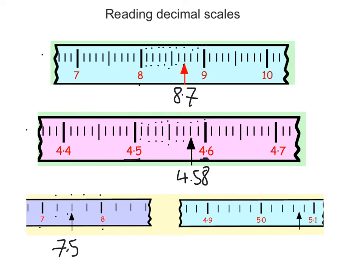Last one. Again, let's count the divisions between the two bold lines. So this is 1, 2, 3, 4, 5. So it's going up in fifths.